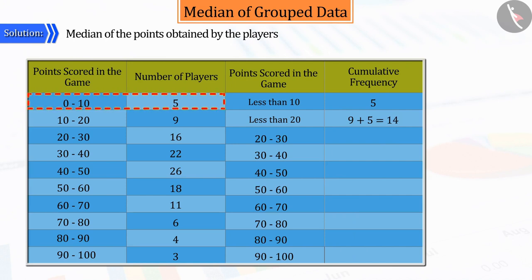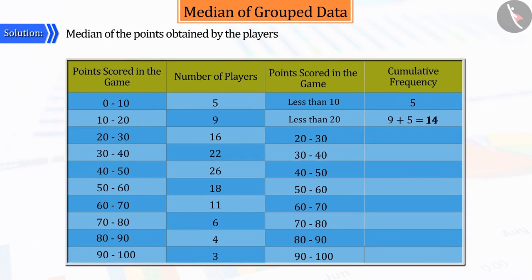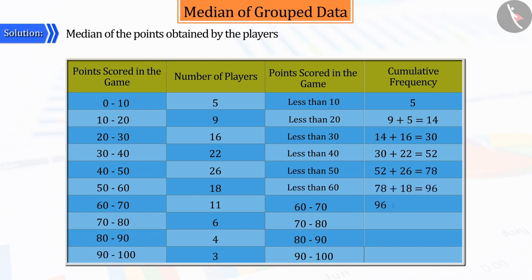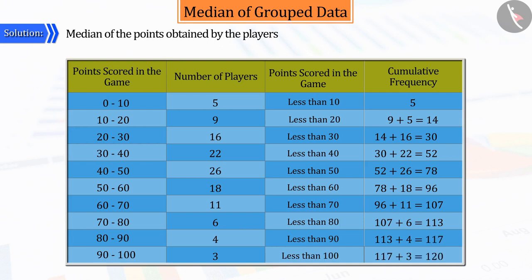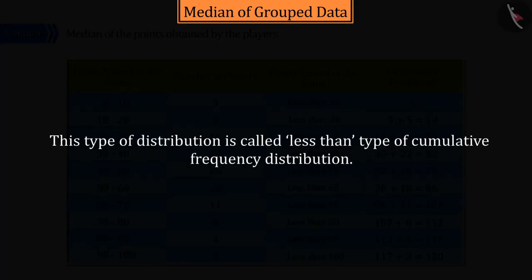Because those players will also be included who have scored points between the class interval 0 to 10, and those players will also be included who have scored between class interval 10 to 20, where 14 is the cumulative frequency of class 10 to 20. Similarly, we will find the cumulative frequency of all other classes, from which we can find out the number of players who scored less than 10, 20, 30, 40 and 100. This type of distribution is called the cumulative frequency distribution of the less than type.